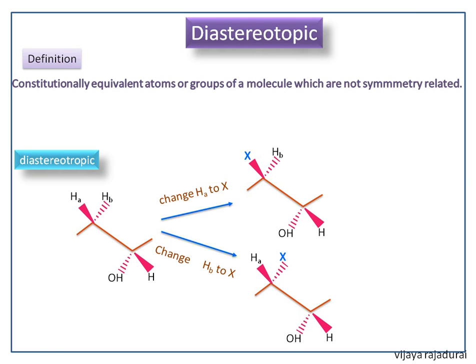Both the structures are not having any symmetry. Roughly I could say the atoms which is attached to equivalent hydrogen atoms or groups should have a chiral center. Then we could say these two similar atoms or groups are said to be diastereotopic.